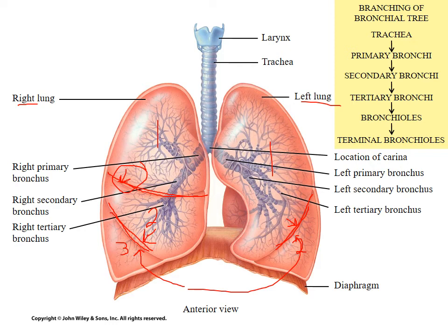The names of the lobes: you've got a superior, middle, and inferior lobe on the right-hand side. The left lung is only going to have a superior and inferior lobe. Last but not least, we have what we call the diaphragm — the main muscle of respiration. It is the muscle of normal breathing, and it is what changes the volume of the thoracic cavity, bringing air in or pushing air out.